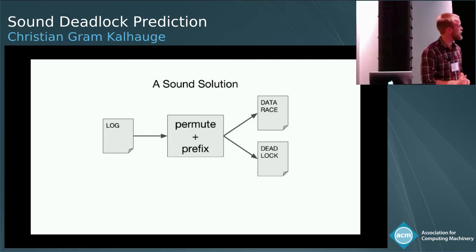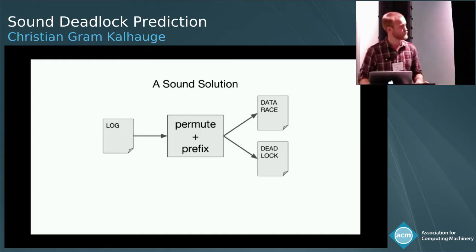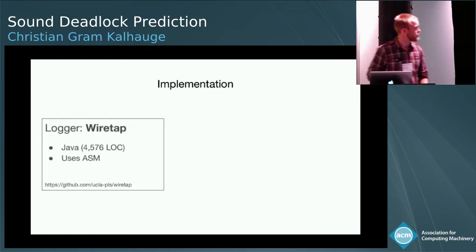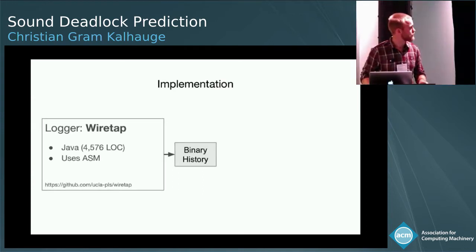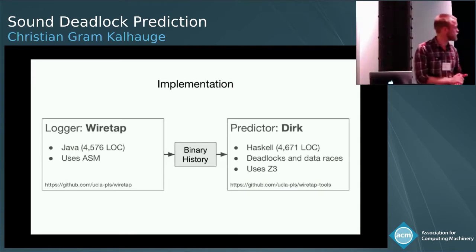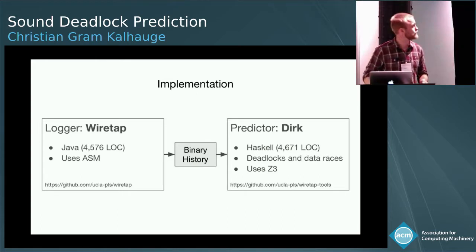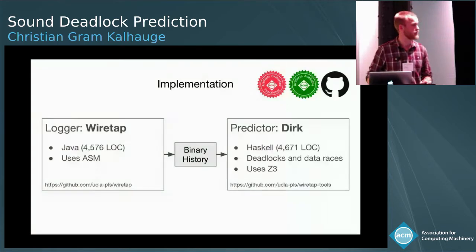Essentially, the new solution is that we log a program, we have a solver that can now permute and prefix, and we have a tool that can both detect data races and deadlocks. Our implementation is a tool called Wiretap, which logs all the events from bytecode into a binary history, which we then read by our predictor called Dirk, which detects deadlocks and data races and uses Z3. Both of these have been artifact evaluated and are available on GitHub, so if you want to try them out, please be very welcome.